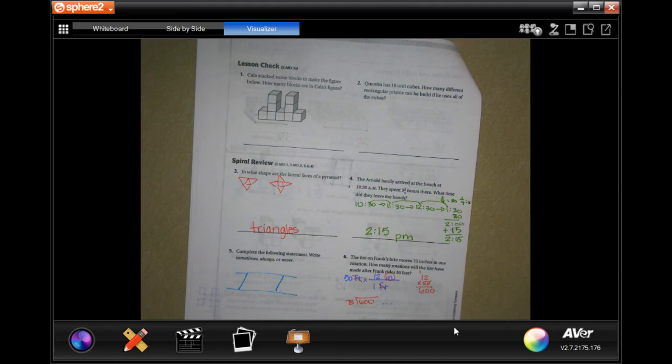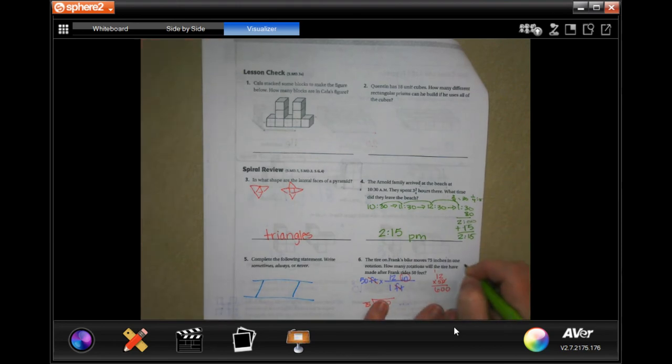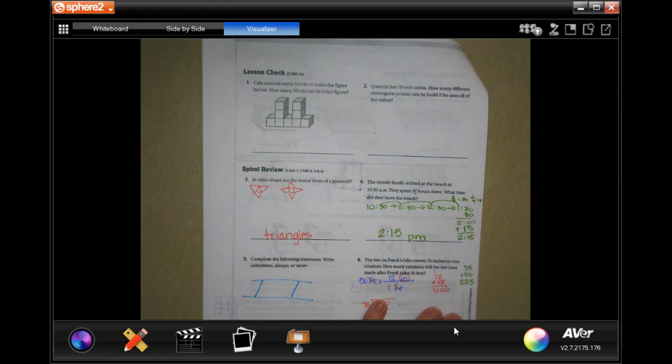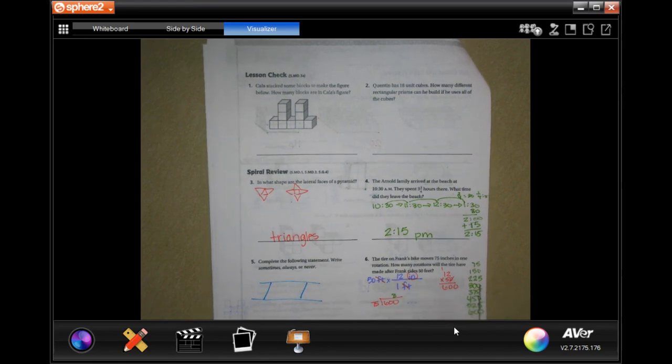So, I'm going to use my handy-dandy calculator just to find my multiples of 75. It is okay to use a calculator to find multiples. It's not okay to use it to do your work. So, we have 75, 150, 225, 300, 375, 450, 525 and 600. So, that's 1, 2, 3, 4, 5, 6, 7, 8 times. So, 8 rotations.